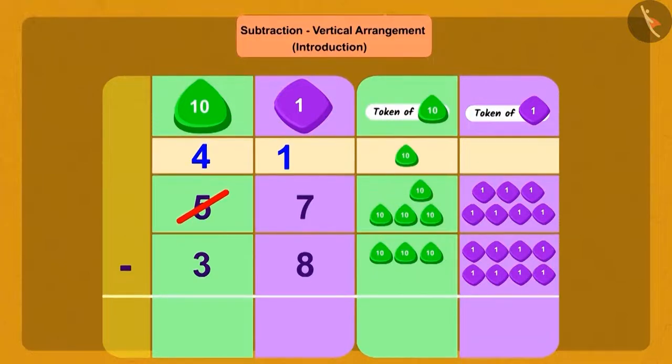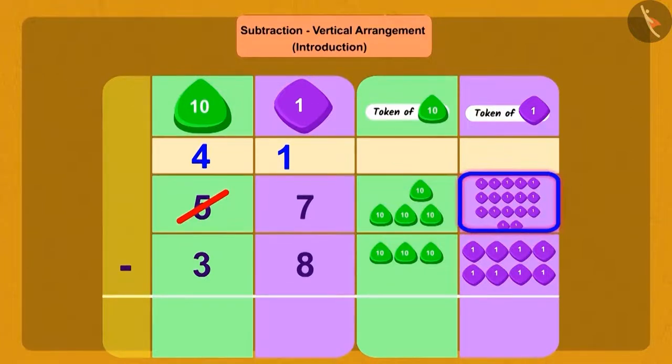By doing this, how many total ones and how many tens do we have? 17 ones and 4 tens.